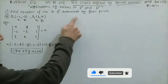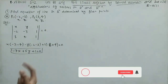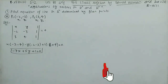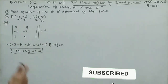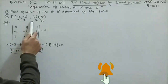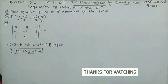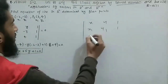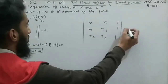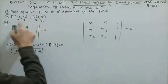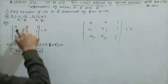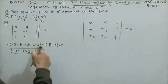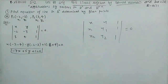Question number 1 of Exercise 5.2: find the equation of a line in R² determined by the given points. There are four parts; I will solve part one. Part one: P1 is (−2, −3) and P2 is (3, 4). The required equation of the line uses the determinant formula: |x  y  1; x1  y1  1; x2  y2  1| = 0. Substituting, x1 = −2, y1 = −3, x2 = 3, y2 = 4, and expanding along row 1 gives the line equation.